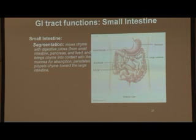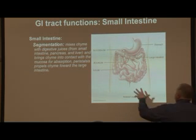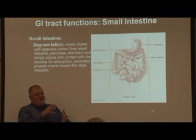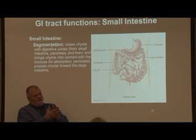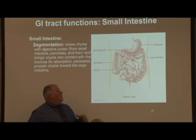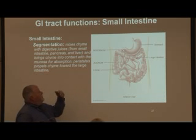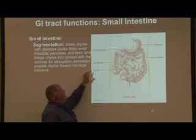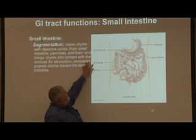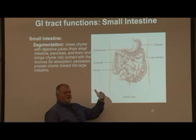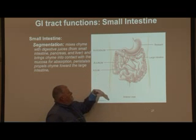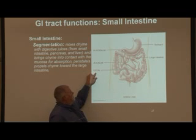The small intestine is what's attached to the stomach. It is heavily coiled so that we can compact it into our abdominal cavity. We divide the small intestine into three regions: the duodenum, which attaches to the stomach and is the shortest region; the jejunum, which is in between and represents a transition from digestion to absorption; and the ileum, which is largely absorption and is actually the largest portion of the small intestine.